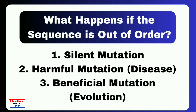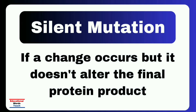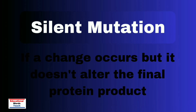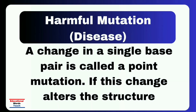There are three types. The first is a silent mutation: if a change occurs but doesn't alter the final protein product — because multiple DNA codes can specify the same amino acid — it is called a silent mutation and often has no effect on the organism. The second is a harmful mutation: a change in a single base pair is called a point mutation. If this change alters the structure or function of a critical protein, it can lead to disease. For example, a single point mutation in the gene for hemoglobin is what causes sickle cell disease.